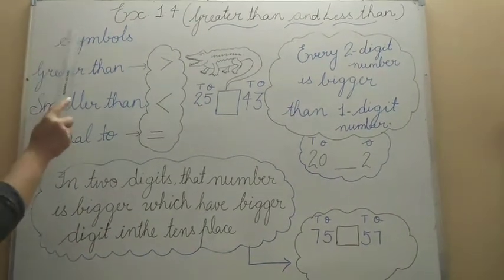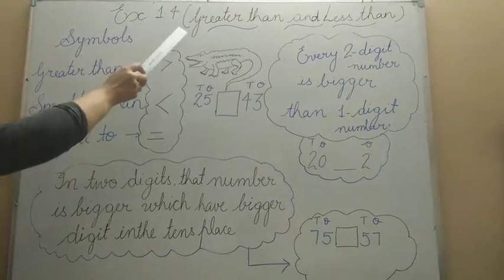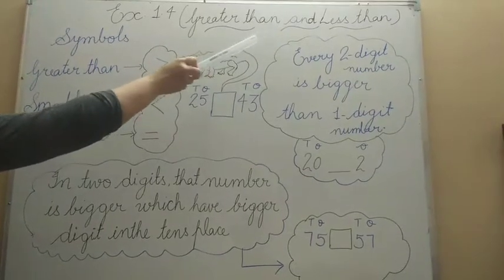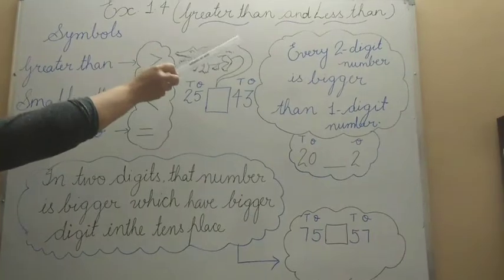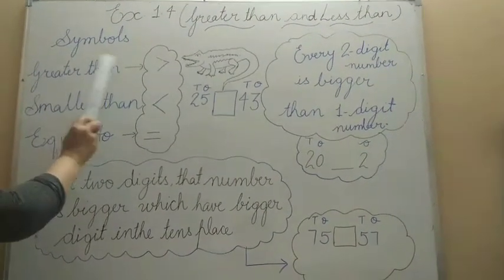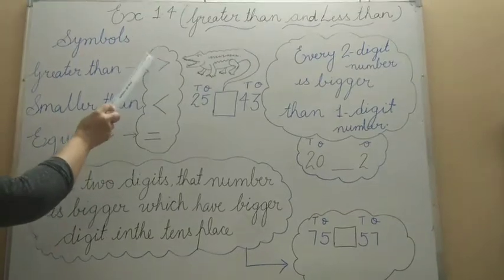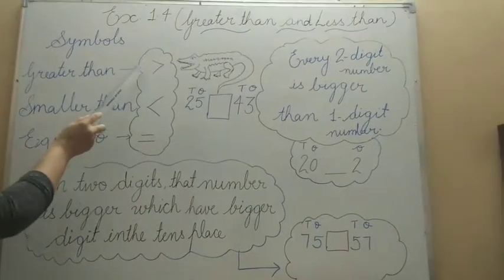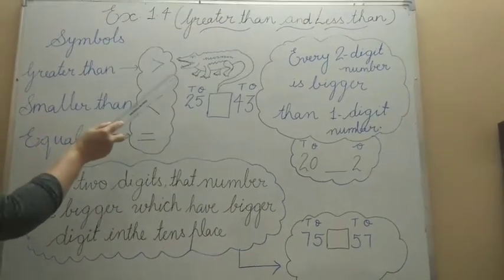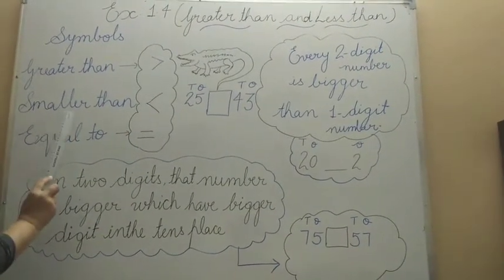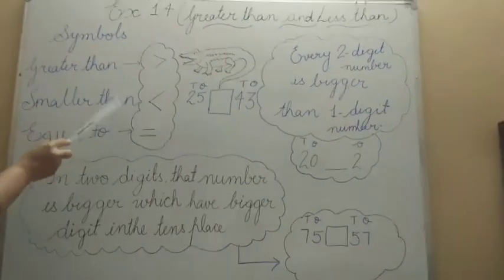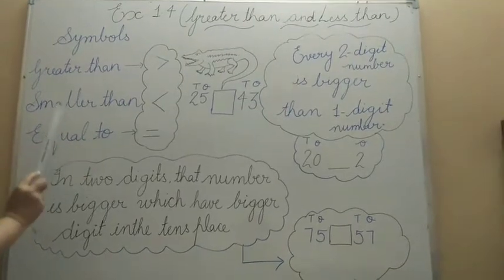Good morning students. Today you will learn about greater than and less than — which number is greater than and which number is less than. You can learn these things by putting these symbols. We will use these symbols: this symbol shows us which number is greater than the other number, and this symbol is used to compare which thing is smaller than the other number.